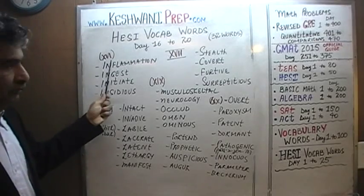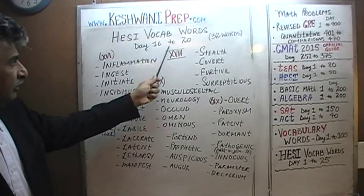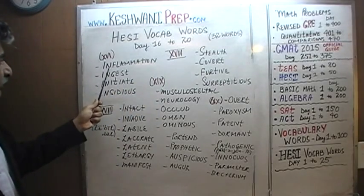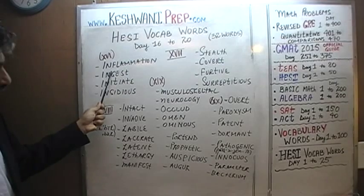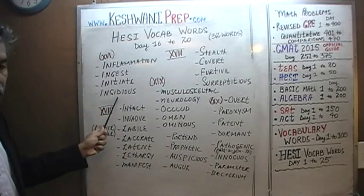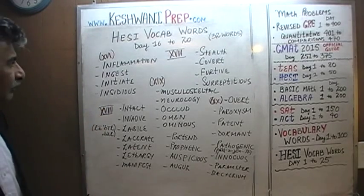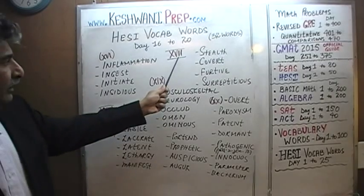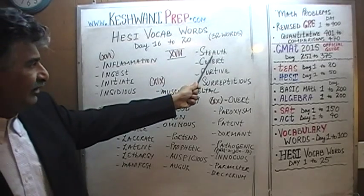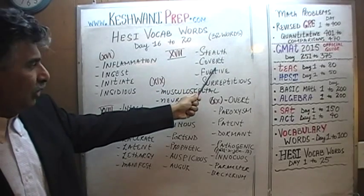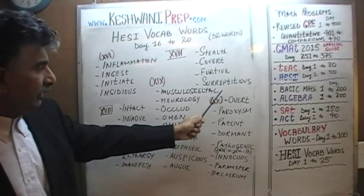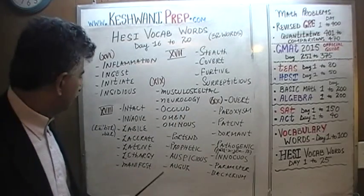On day number 16, we're going to go through 16 through 20 — the words that we learned. On day number 16, we learned about inflammation, ingest, initiate, and insidious. Day number 17, we learned about stealth, covert, furtive, and finally surreptitious.